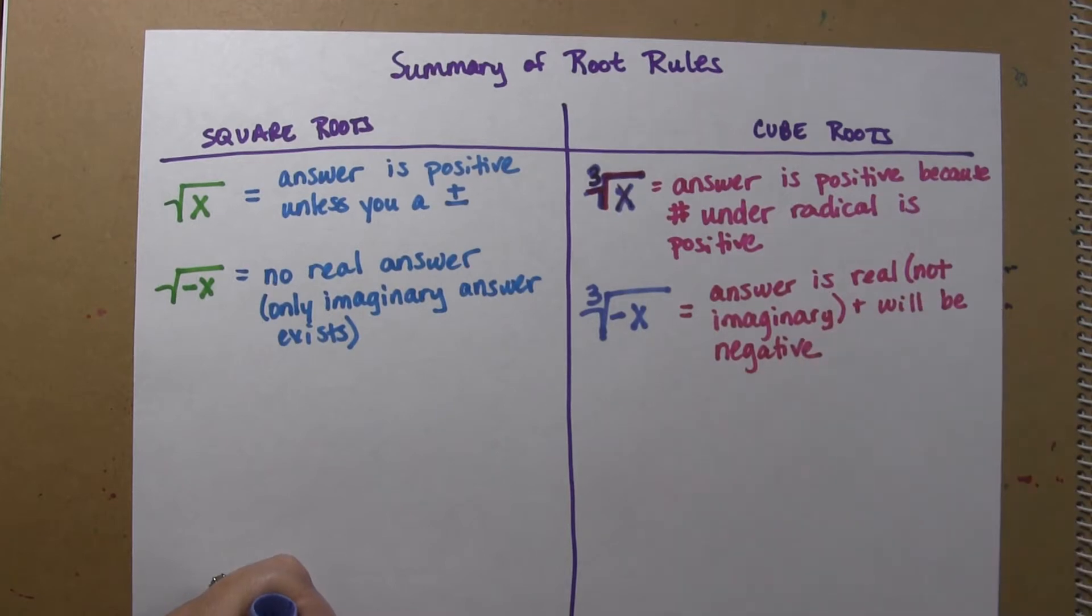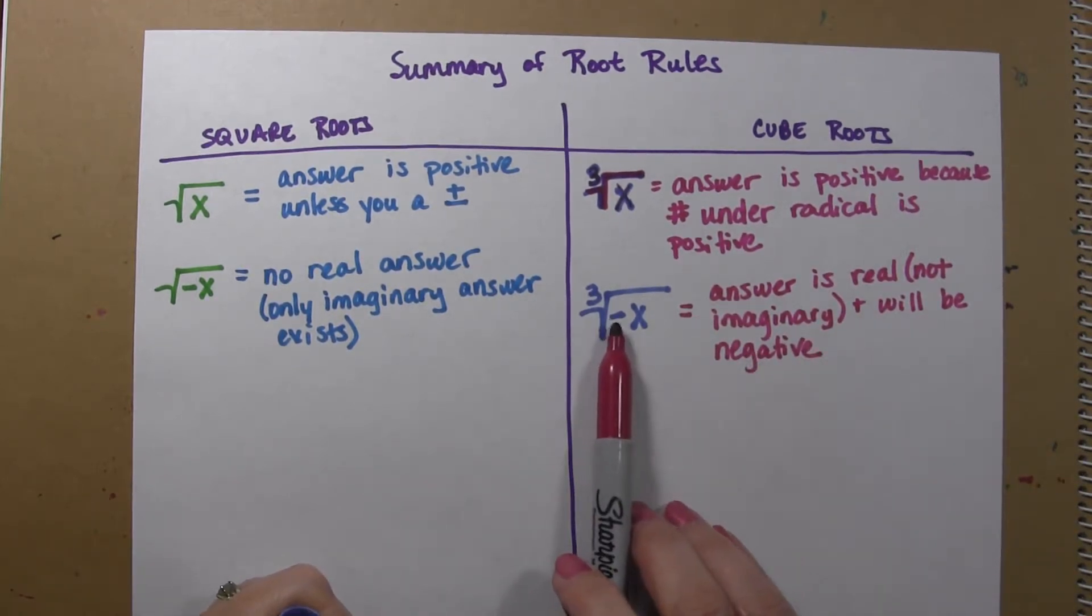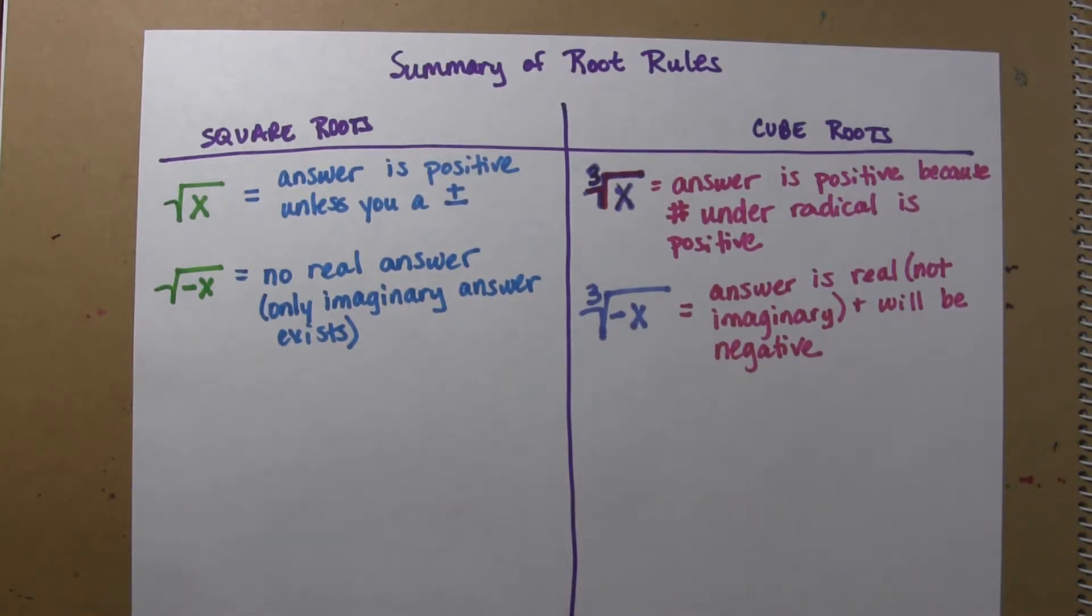So you can get an answer, and the answer will be negative because you're going to multiply three negative numbers together to get that negative number underneath the radical sign. So those are two things that we know already.